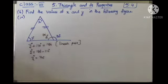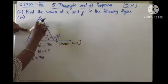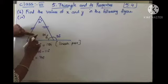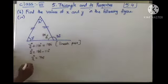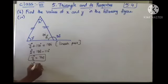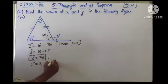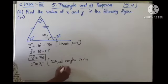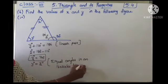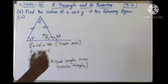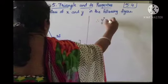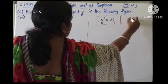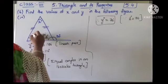Now these two are equal sides of an isosceles triangle. The equal angles in an isosceles triangle give us angle y equals angle z. Therefore y equals z, which is 70 degrees. So the value of y is 70.